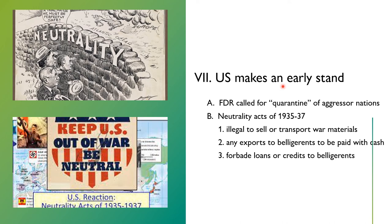The United States made an early stand — Franklin Roosevelt called for a quarantine of aggressor nations. Americans wanted to stay neutral and keep out of the problems of Europe. They built a wall of neutrality. The Neutrality Acts of 1935 through 1937 made it illegal to sell or transport war materials to any of the belligerents — the Allies or the Axis powers — and any exports to belligerents were to be paid for with cash. No war materials at all.